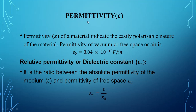Next, we are going to see about permittivity. Permittivity is represented by the letter epsilon, which represents the easily polarizable nature of the material. The permittivity of free space, vacuum, or air is a constant denoted by epsilon naught; its value is 8.84 × 10⁻¹² farad per meter. Next, we see relative permittivity or dielectric constant — it is a characteristic property of the dielectric, defined as the ratio between the absolute permittivity of the medium epsilon and the permittivity of free space epsilon naught.